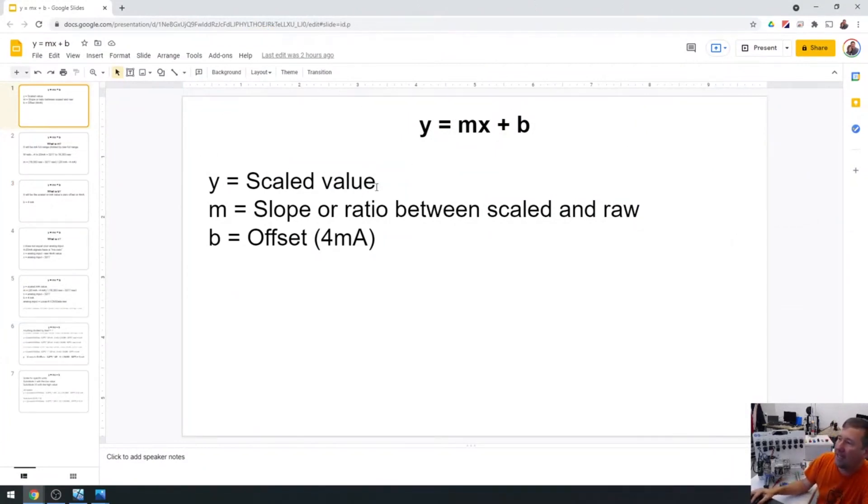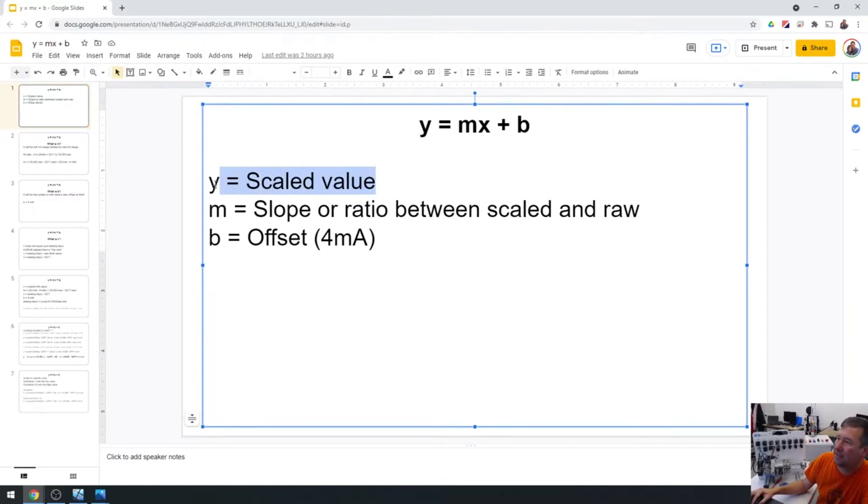And so our Y is our scaled value. So in this case, what I want to scale this to is I'm going to scale it to 4 to 20 milliamps. So I want this to end up being 4 to 20 milliamps. Now, I know usually you wouldn't make it 4 to 20. Usually it's going to be some real value. But let's start there just so we can understand it.